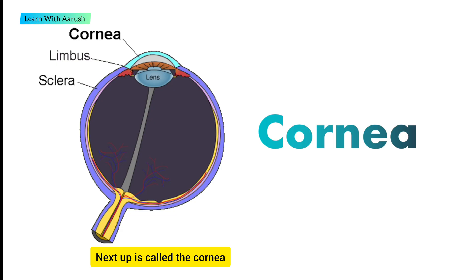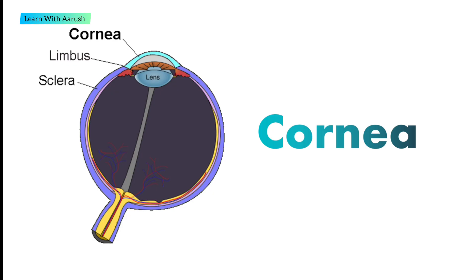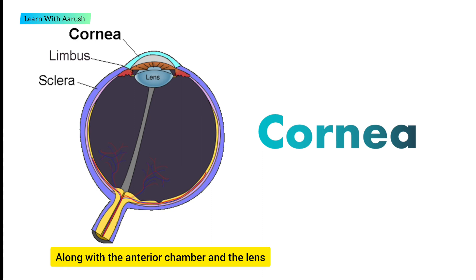Next up is the cornea. The cornea is the transparent front part of the eye that covers the iris, pupil, and interior chamber. Along with the anterior chamber and the lens, the cornea refracts light,